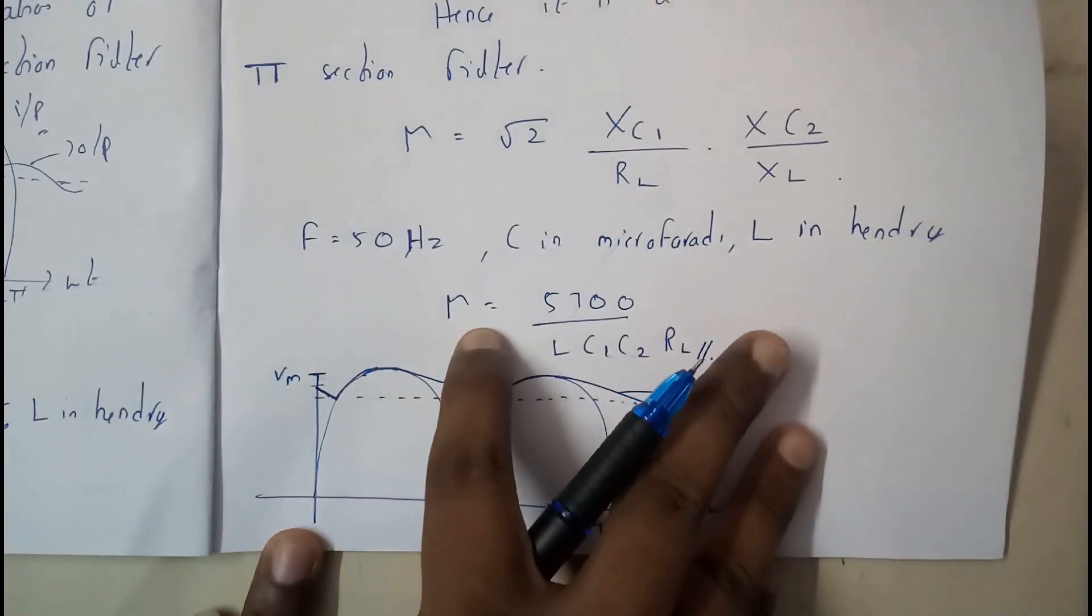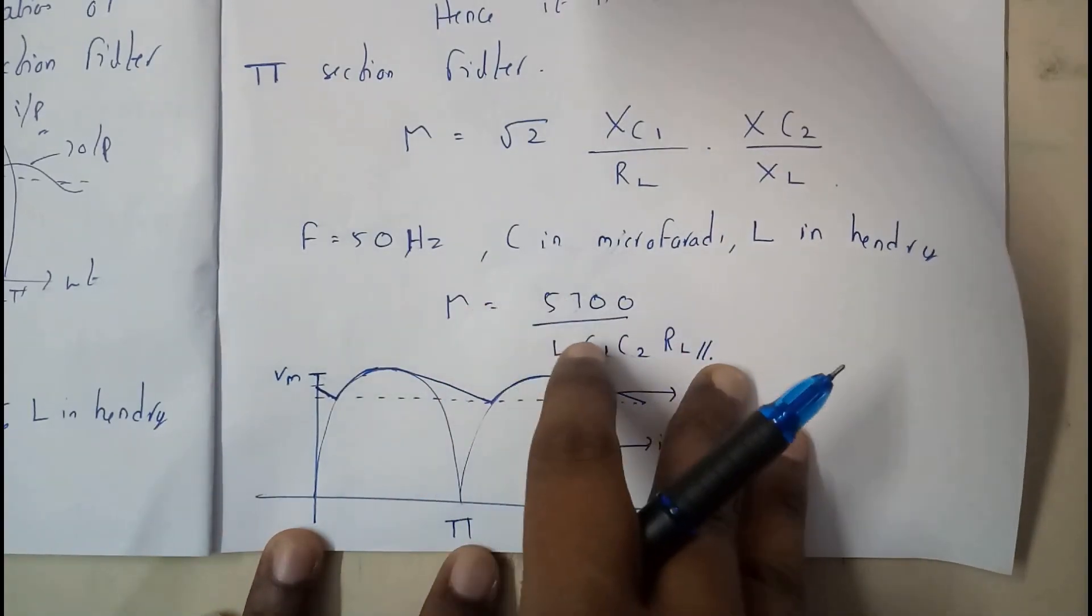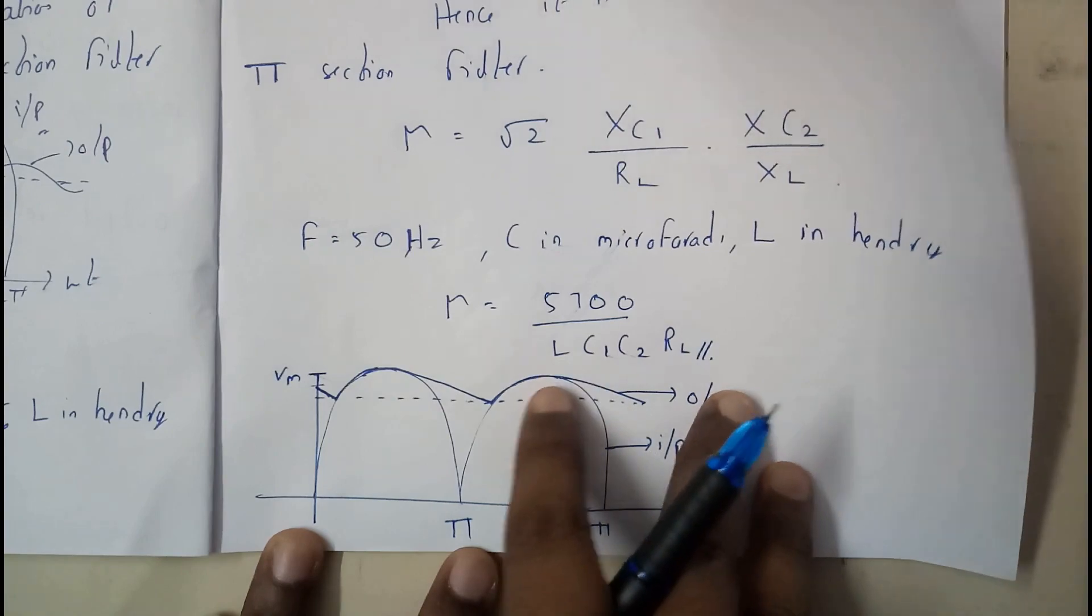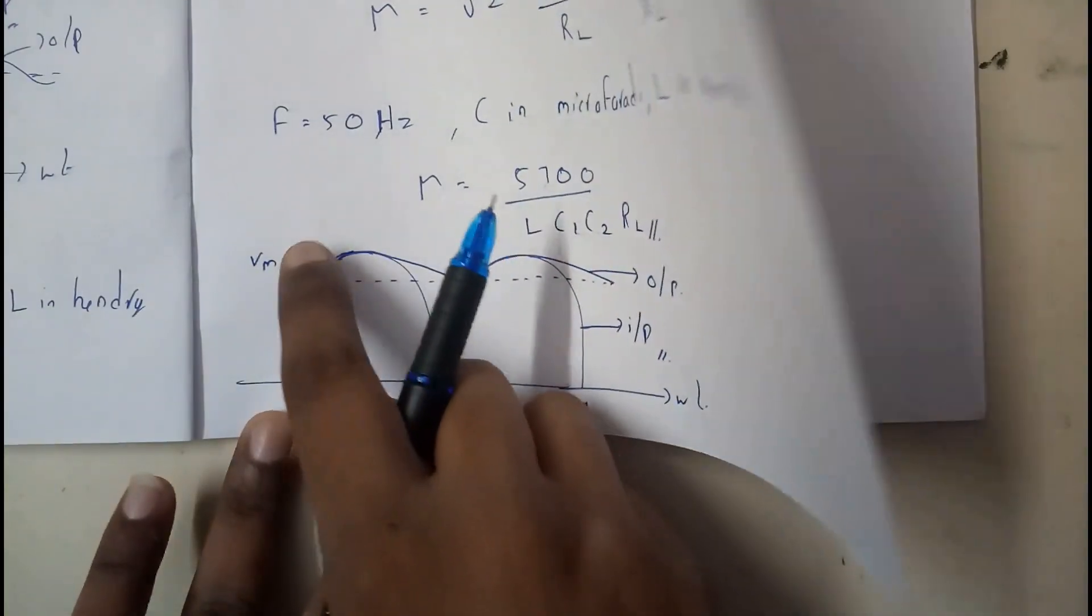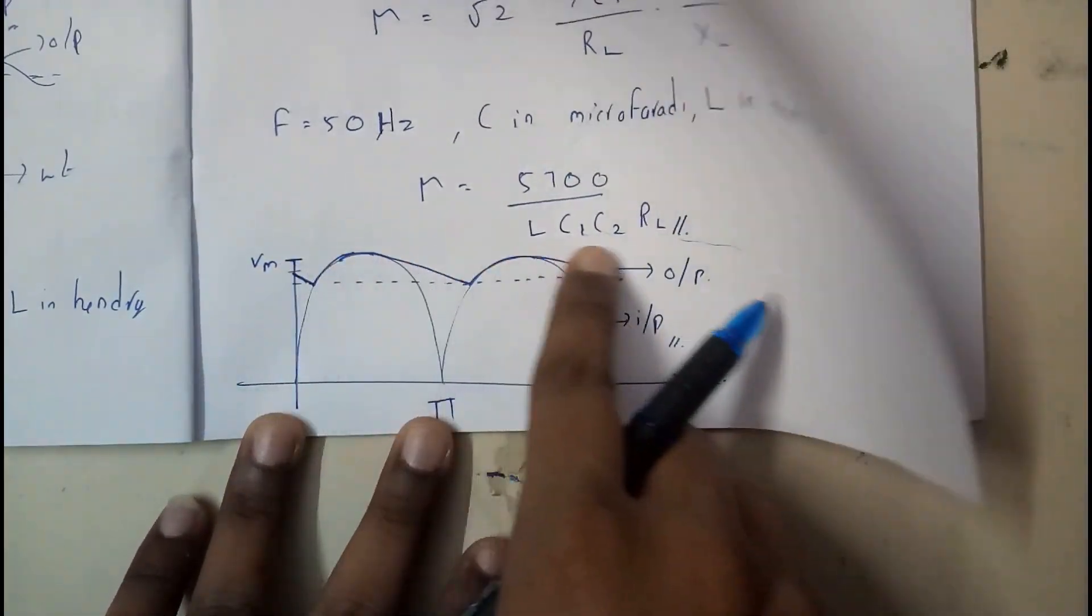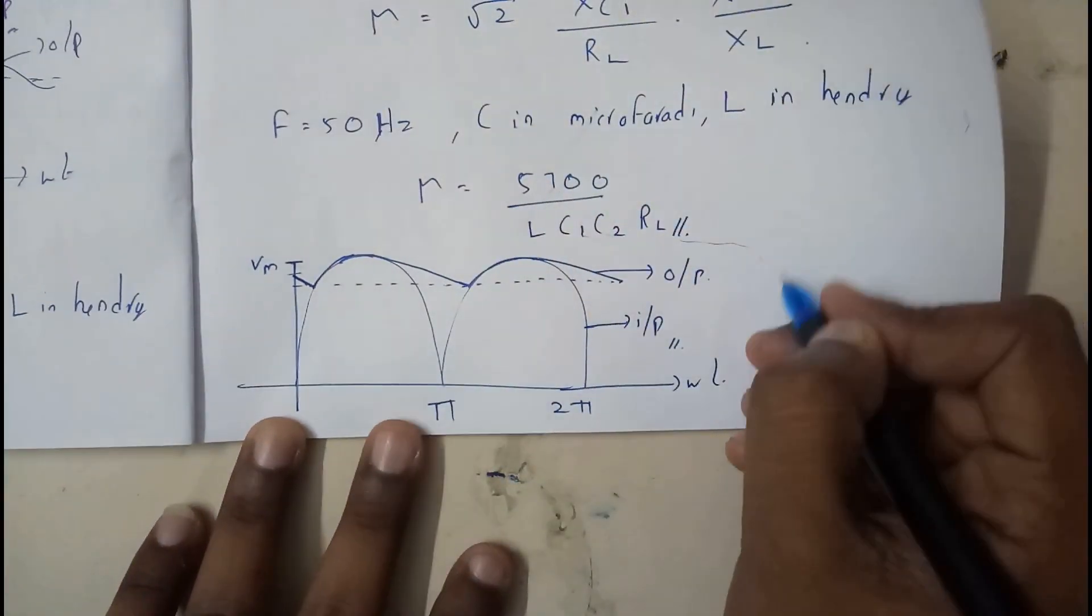We get an equation: ripple factor equals 5700 by L C1 C2 RL. In this case, you will be getting a triangular graph.